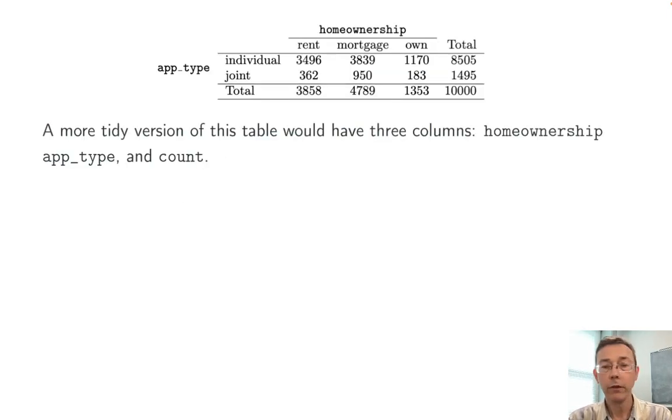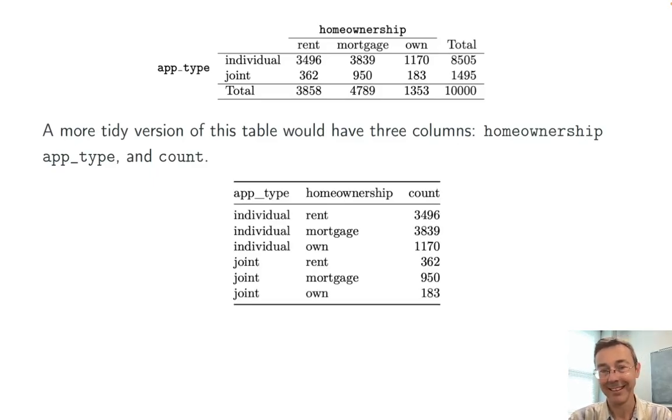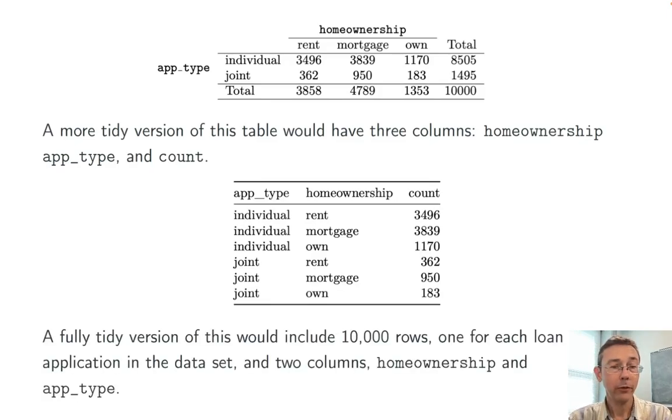A more tidy version of this table would have three columns: the home ownership status, the application type, and the count. Like this. Now, of course, to get a truly tidy data set, we would need 10,000 rows, each consisting of one specific observation. In other words, one loan application.